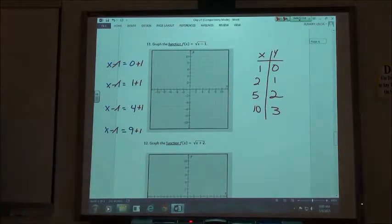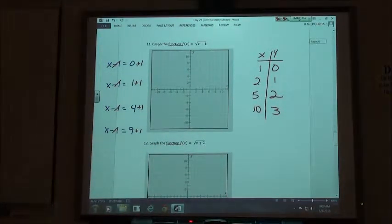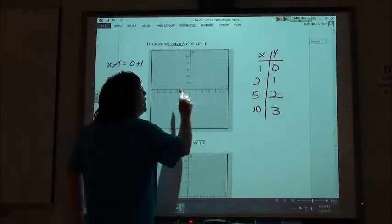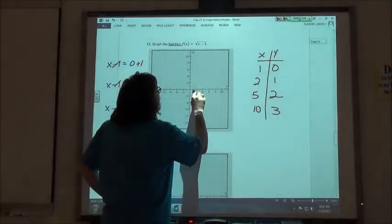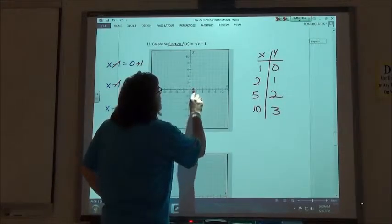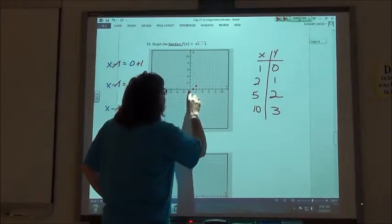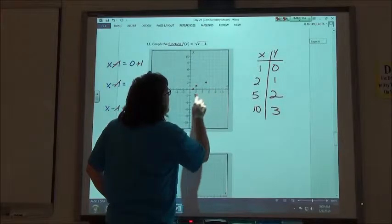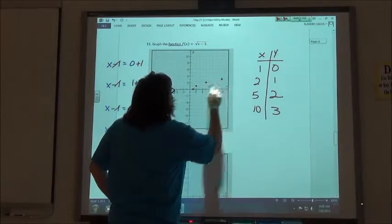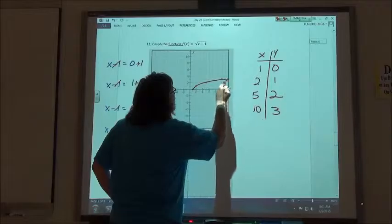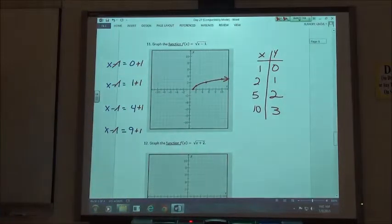So every value came out to a nice whole number answer that you can easily plot. So 1 over up 0, 2 over up 1, 5 over up 2, and 10 over is up 3. And my graph looks something sort of like that.